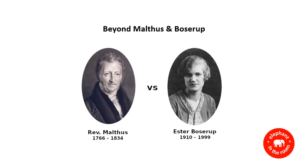This time we're going to talk about humans and resources, and in particular the relationship between population growth and food supply. We're going to look at the ideas of two very influential thinkers in this area. The first is this guy, Reverend Thomas Malthus, and he was busy writing pamphlets and worrying about too many poor people in the early 1800s.